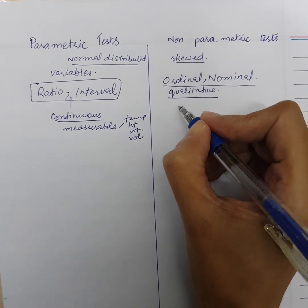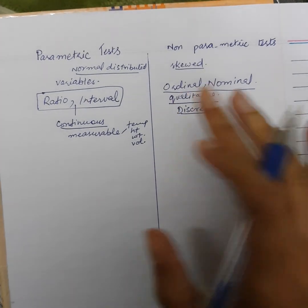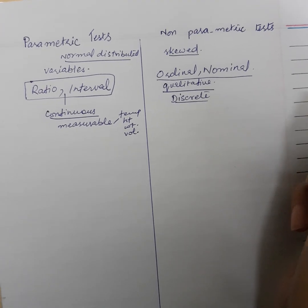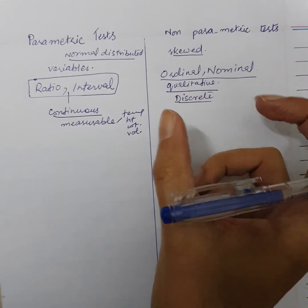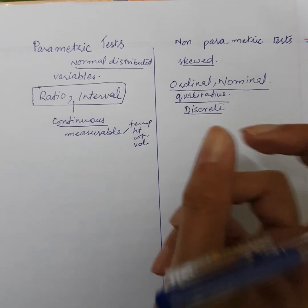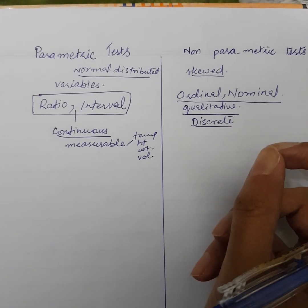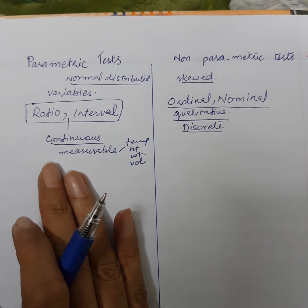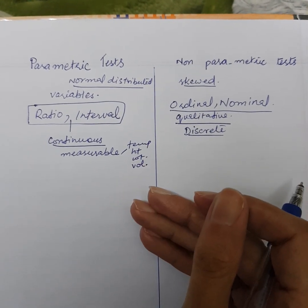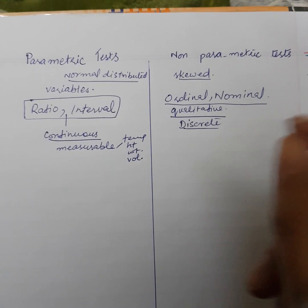Ordinal and nominal variables are also called discrete variables — they are always in whole numbers. For example: in a class, how many males and how many females? In a group of 10 children, how many have brown hair color and how many have black hair color? Number of family members in a house — this is discrete data. In contrast, continuous variables are measurable and can have decimal values; height can be 5 feet 2 inches, temperature can be 55.5. But discrete data will always be whole numbers: 10, 20, 30.